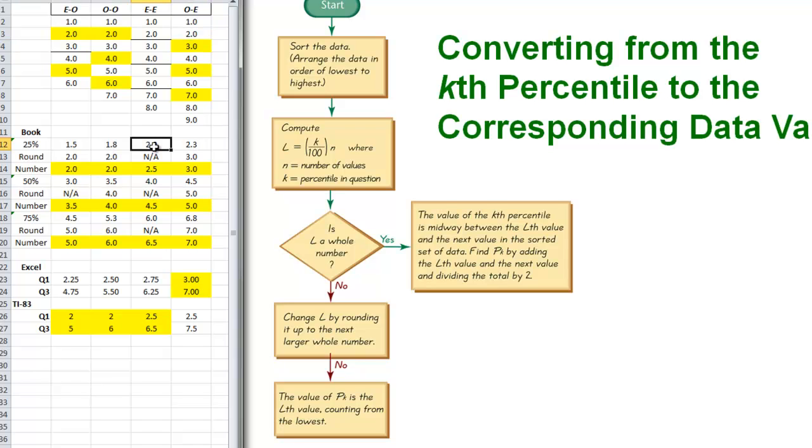Now for this one where we didn't have to round because when we just did this formula we got a whole number then we go this way on the decision tree and it just says the thing that we are looking for is halfway between the number we just got and the next number. So we look right between the second and third number. Here is the second and third number and we take the midpoint between those two so we average them and we get 2.5.